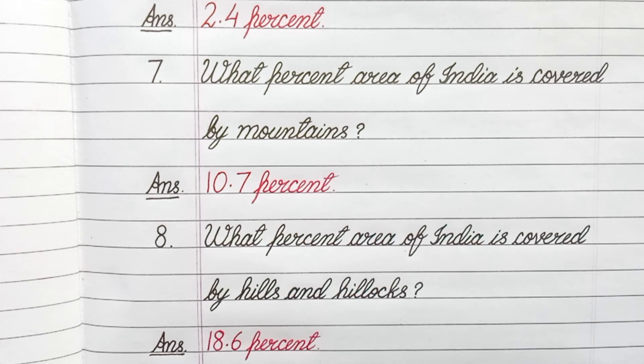Question number 8: What percent area of India is covered by hills and hillocks? Answer: 18.6 percent.